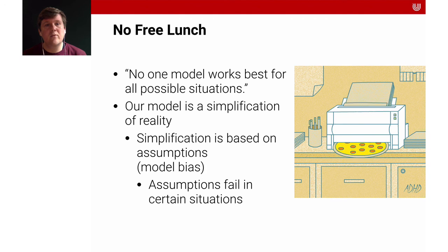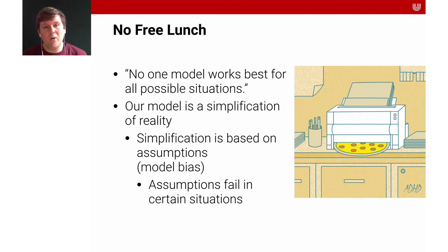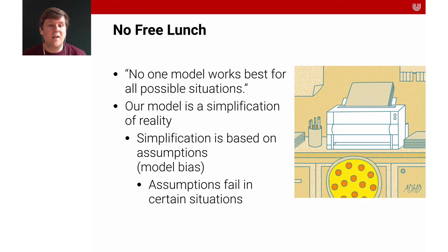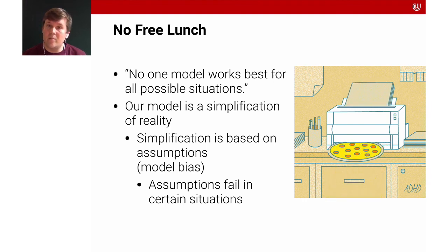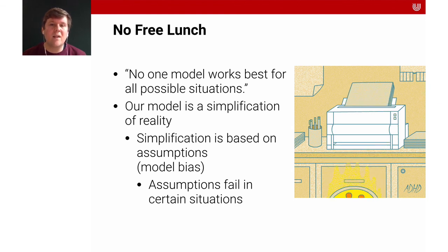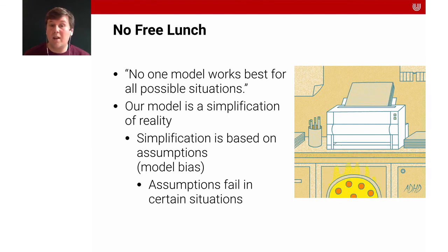One important thing to consider is that there's no free lunch — no model works best for all possible situations. Our machine learning models are always a simplification of reality based on certain assumptions, which is a so-called modeling bias. Such assumptions can fail in certain situations, so we have to make thoughtful, justified decisions. We will learn in this course how to make these compromises and develop systems that are actually good at making generalizable predictions.